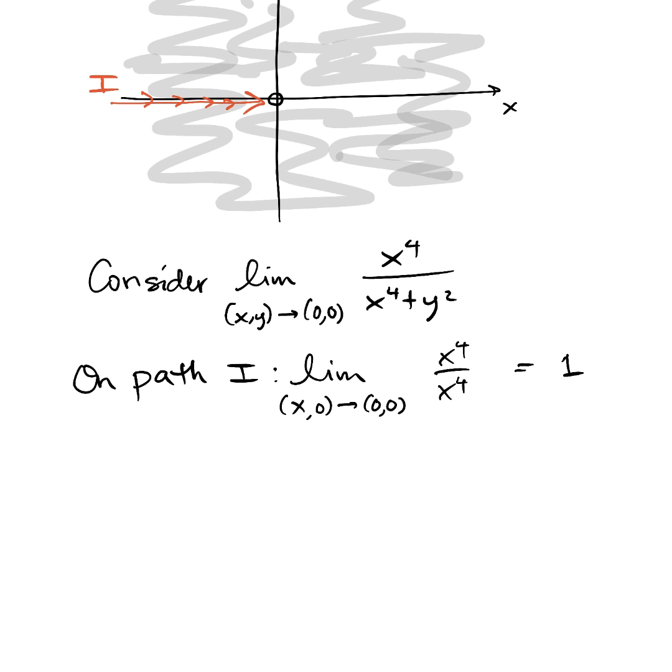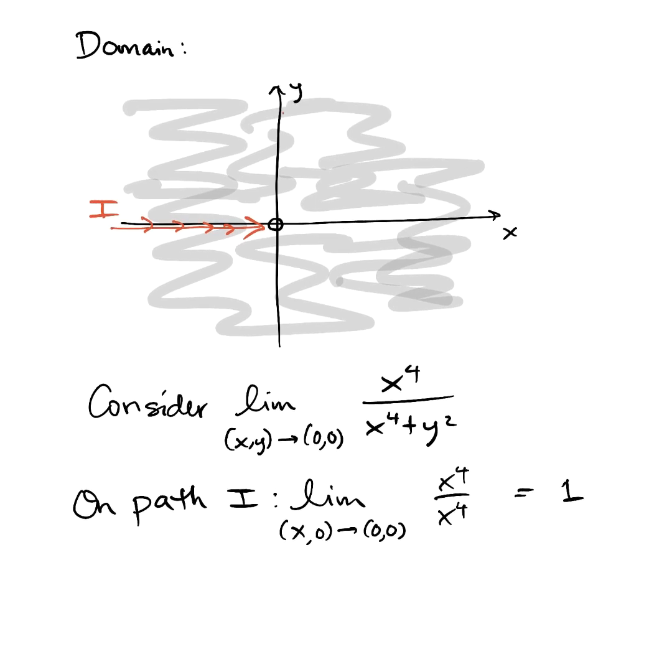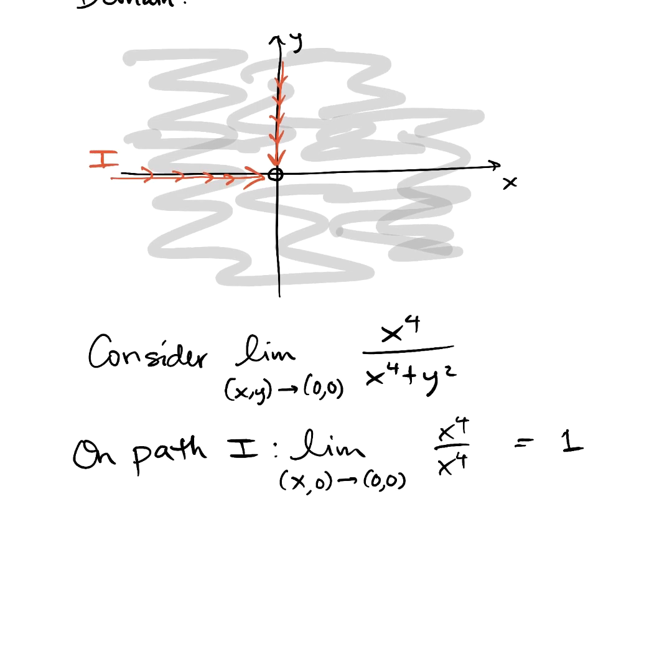All right, consider a different path though. How about, how about on this path? How about the red path cruising down the y-axis? So what if we cruised towards zero, marching down the positive y-axis and we call that path two? All right, well, on path two,